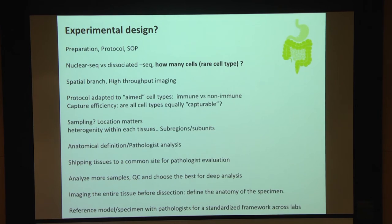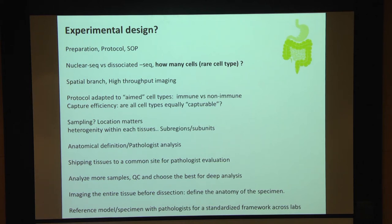For sampling, we discussed doing a simple analysis first — accessing different regions in triplicate, defined also by anatomical definition. We also discussed the need to have a pathologist involved, not only to assess tissue quality, but also to design what we call a coordinated tissue approach to carefully define the anatomy of the specimen, and to share this across labs.